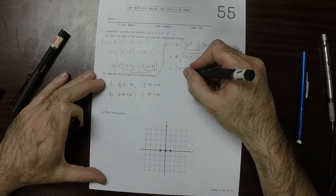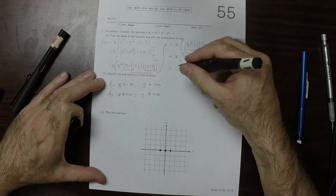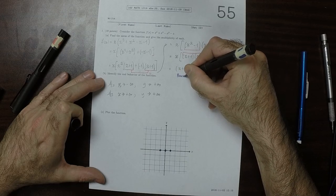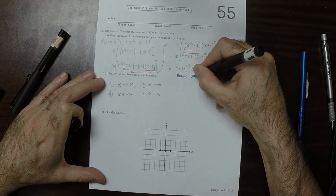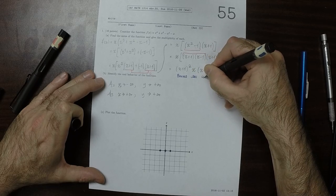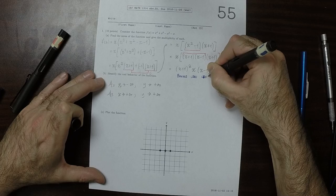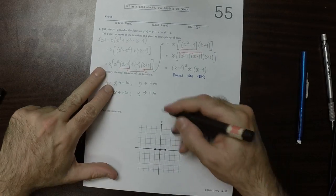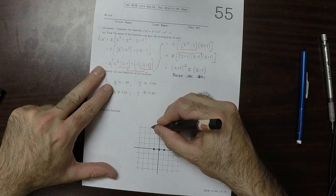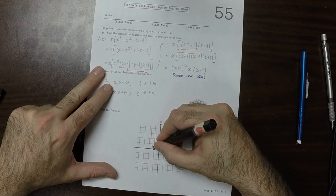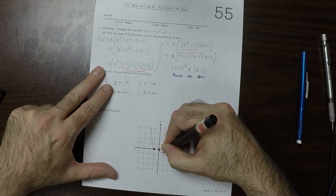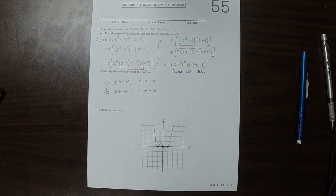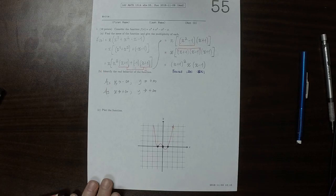So that's a zero, that's a zero, that's a zero. This one will be a bounce because it has even multiplicity. This one will be a cross, and this one will be a cross. So something like this: bounce, cross, cross. And that's the answer.